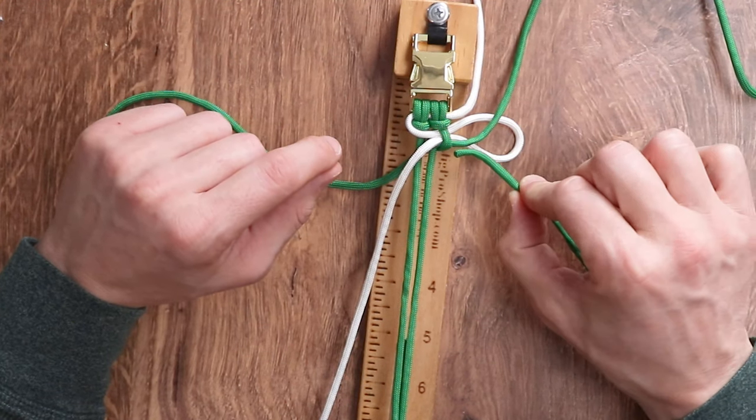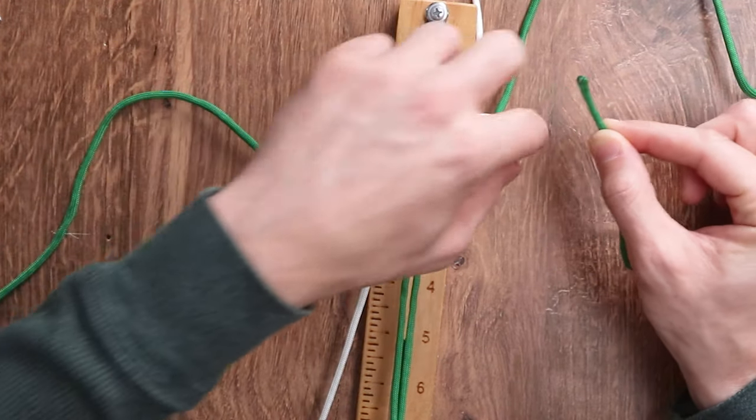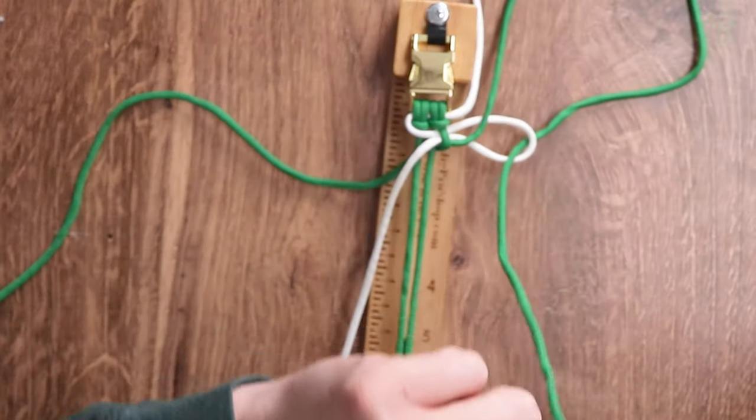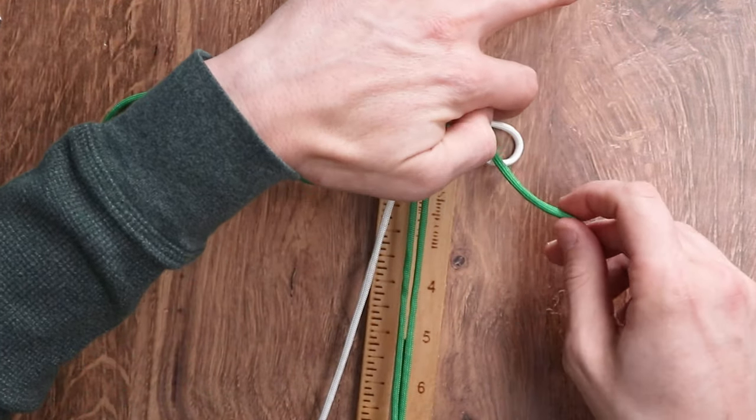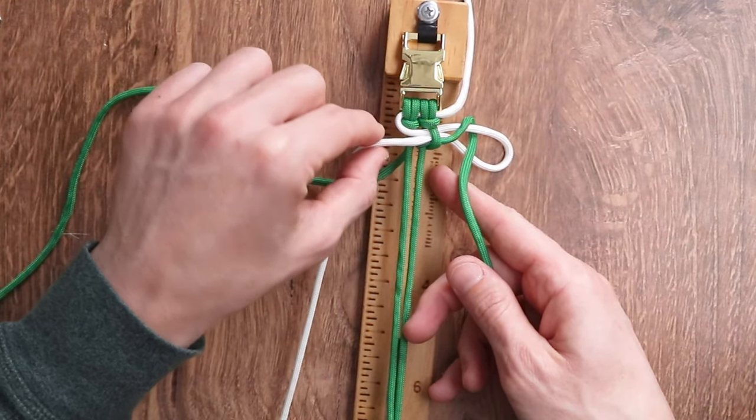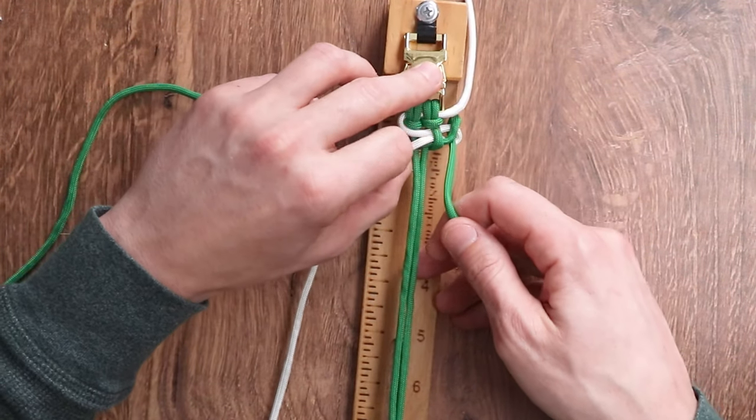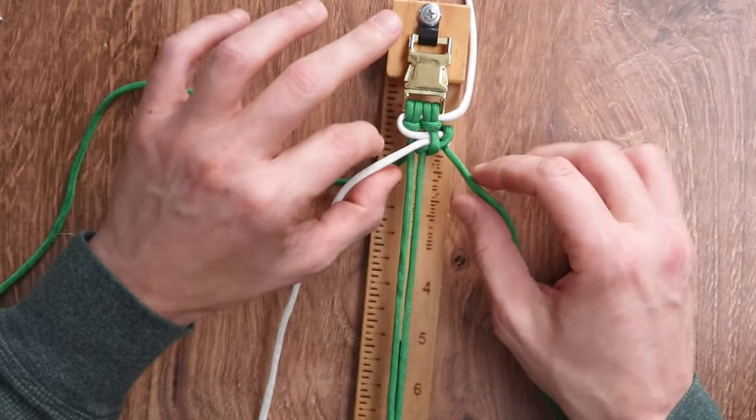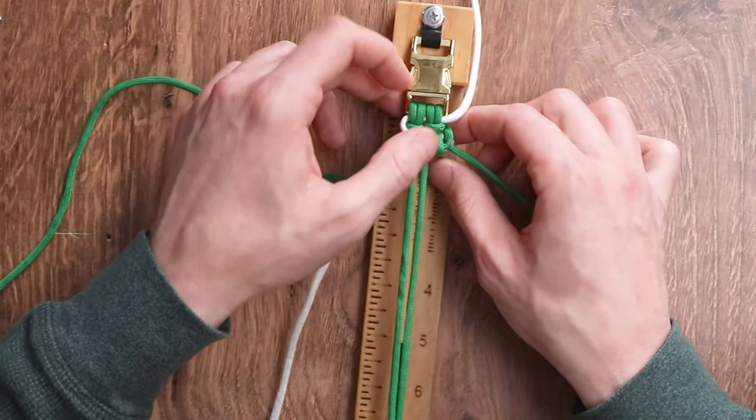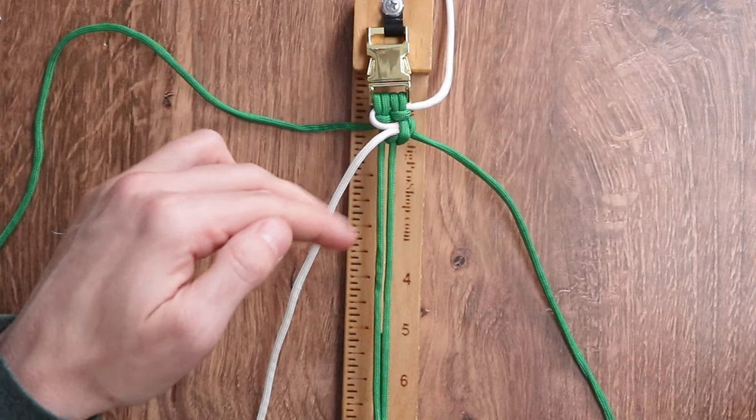With that same working strand, once we tighten up the knot as tight as we would like it, we're going to take the end of our working strand and go behind and through the white loop. Our next step is we're going to tighten down the white knot and the green knot as well. So we're basically just pulling on both of the strings as we make this knot tighter. And at that point, we have completed one pass of our leprechaun weave.